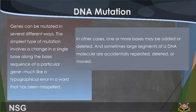DNA Mutation. Genes can be mutated in several different ways. The simplest type of mutation involves a change in a single base along the base sequence of a particular gene, much like a typographical error in a word. In other cases, one or more bases may be added or deleted, and sometimes large segments of a DNA molecule are accidentally repeated, deleted, or moved.